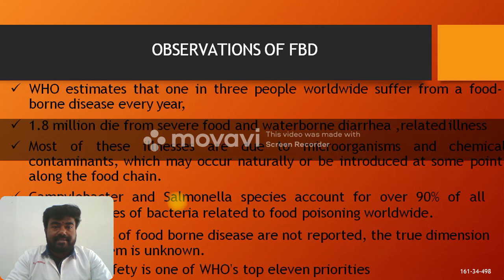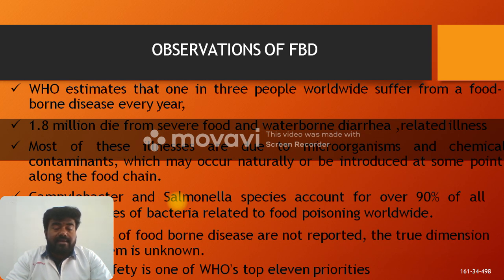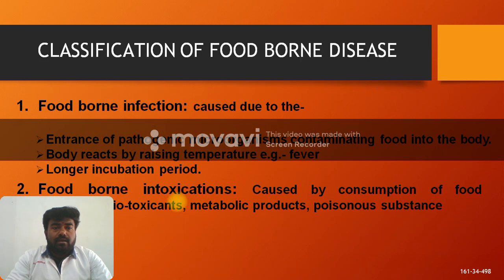The World Health Organization estimated that 1 in 3 people worldwide suffer from foodborne diseases every year. Totally, over one million die from severe food and waterborne diarrhea and related illness. Salmonella bacteria is the most common, responsible for approximately 90% of bacterial organisms causing food poisoning worldwide.